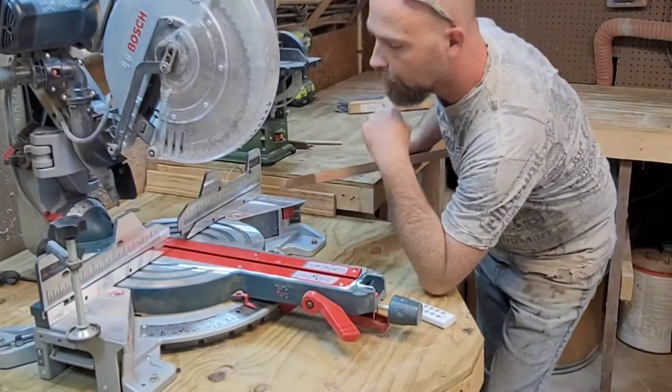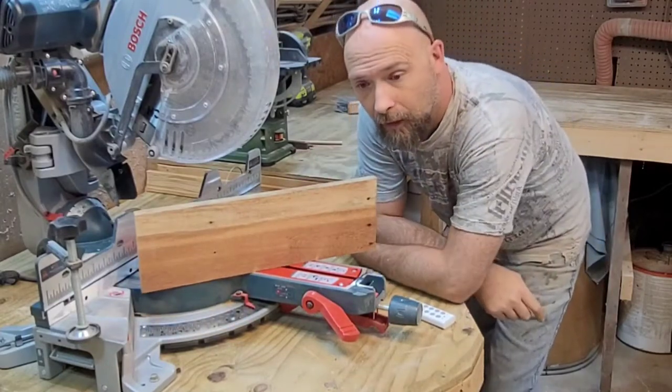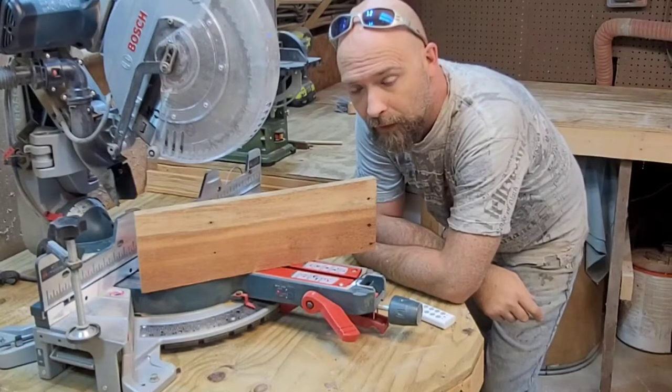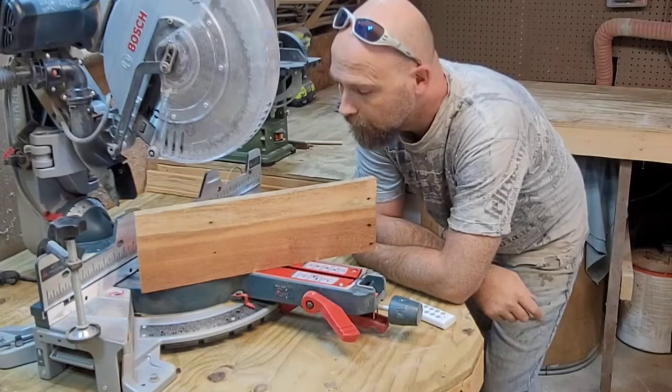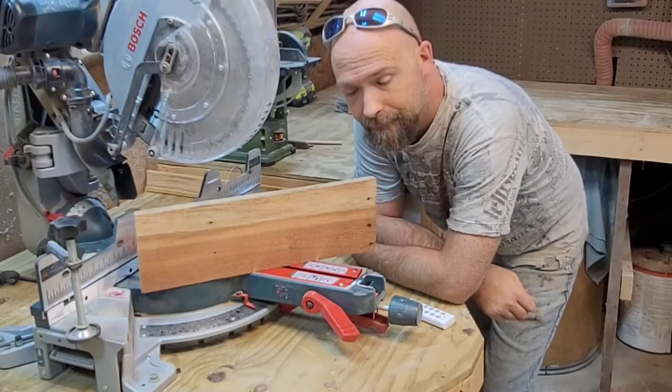So we're going to take this piece of Osage Orange and we're going to make a zero clearance insert. Here's how.